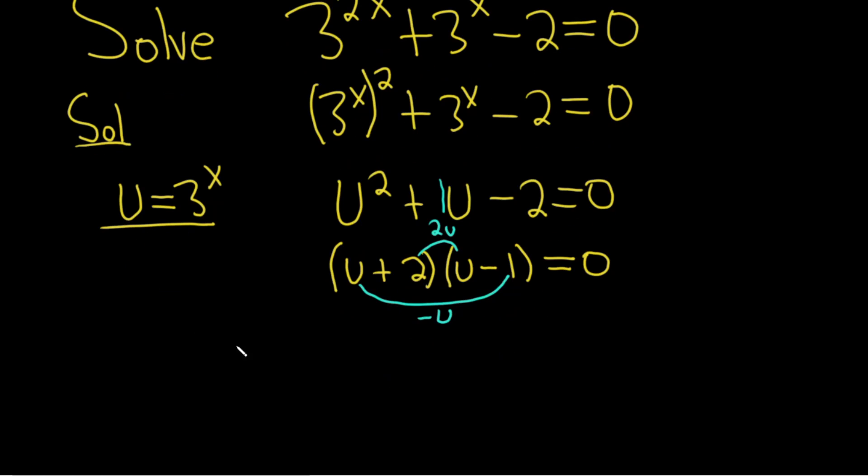From this, we set each factor equal to 0. u + 2 = 0 or u - 1 = 0. So u = -2 or u = 1.